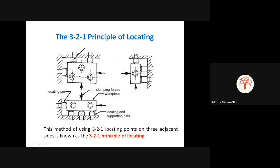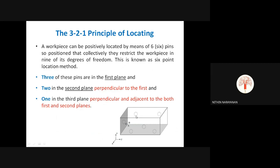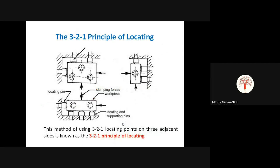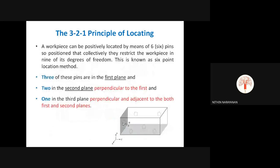The remaining three degrees of freedom are arrested by clamping the workpiece. So clamping and locating are two different processes: locating uses pins and locating devices, while clamping arrests the remaining degrees of freedom. After clamping, all twelve degrees of freedom are arrested. This method of using 3-2-1 locating points on three adjacent planes is known as the 3-2-1 principle of locating.